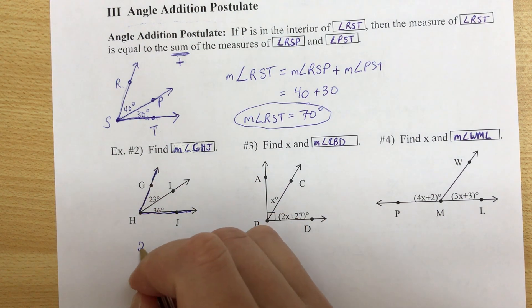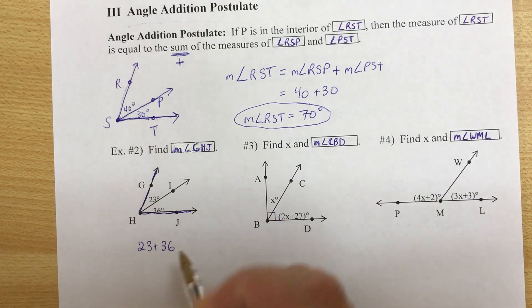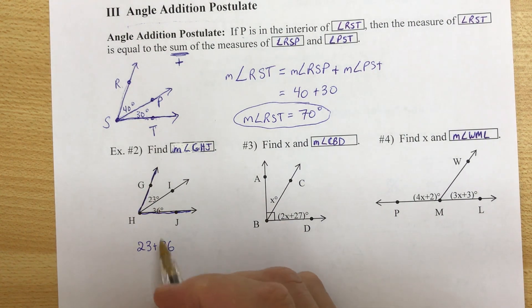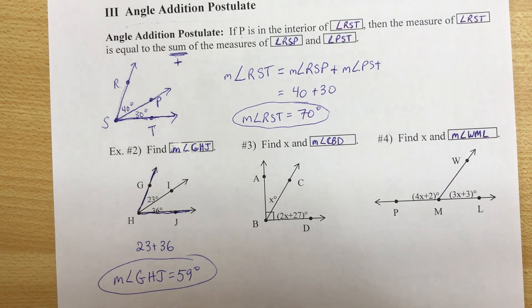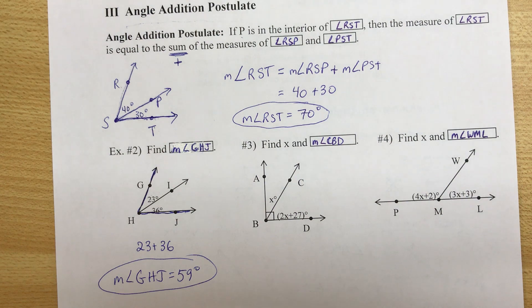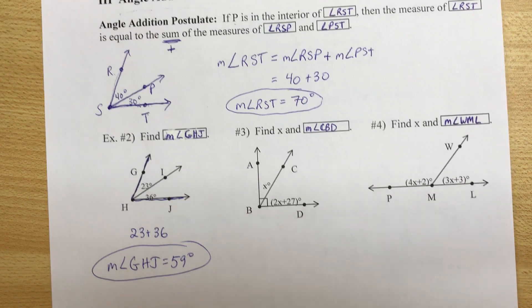So that's this whole thing. We have 23 and 36. So if we add the two small angles we get the whole thing. So measure of angle GHJ is 59 degrees.